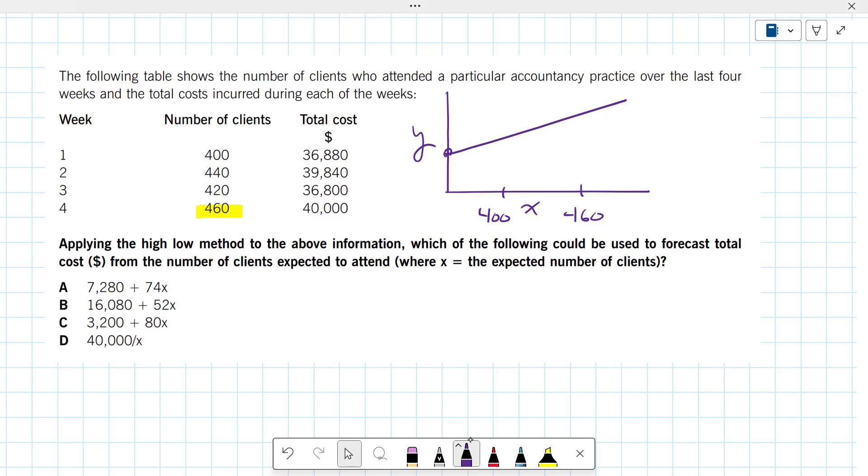So we've chosen the high and the low number of clients. And then we will get a corresponding total cost. So we're going to come up here and we get a corresponding total cost. I'll do that in red. So then we have the 40K over here, and here we have the 36.9.